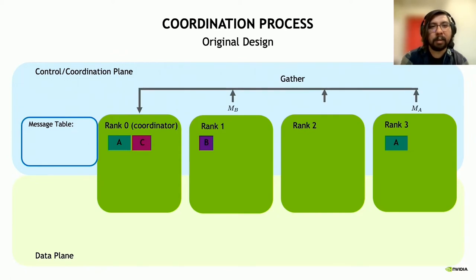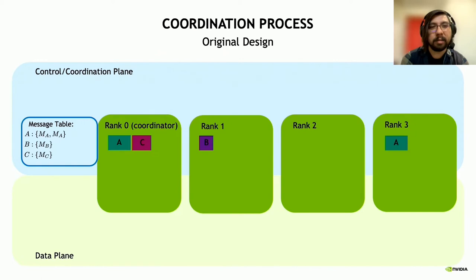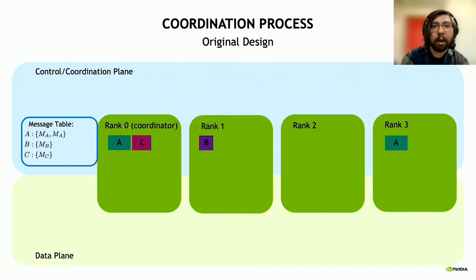First, each worker except rank zero creates message objects—metadata describing the tensors it wants reduced. Rank one creates a message for tensor B, rank three creates a message for tensor A, rank two has nothing. These messages are gathered to rank zero, the coordinator. Rank zero then processes these messages, including those for its own tensors, and places them into the message table. It checks whether any tensors have a full set of messages—a number equal to the number of workers, in this case four—to determine whether a collective is ready. In this case, no tensors have a full set, so we move on to the next cycle.